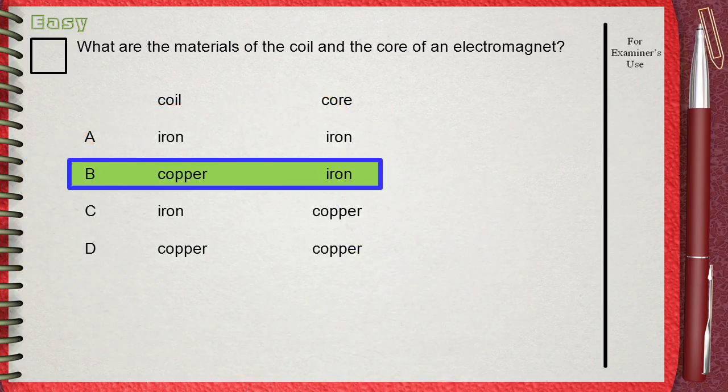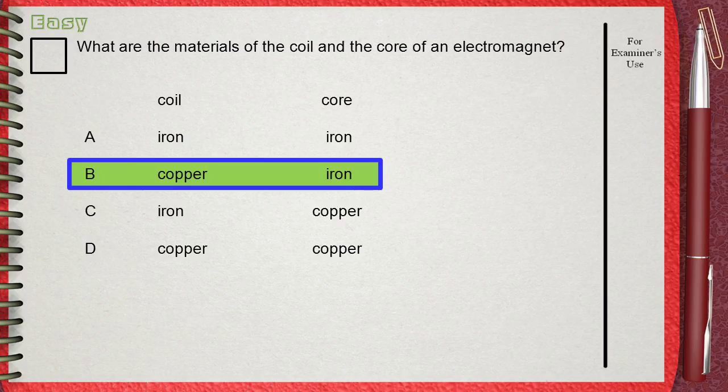This makes the answer number B. Copper is a perfect conductor of electricity so it can be used for the coil.